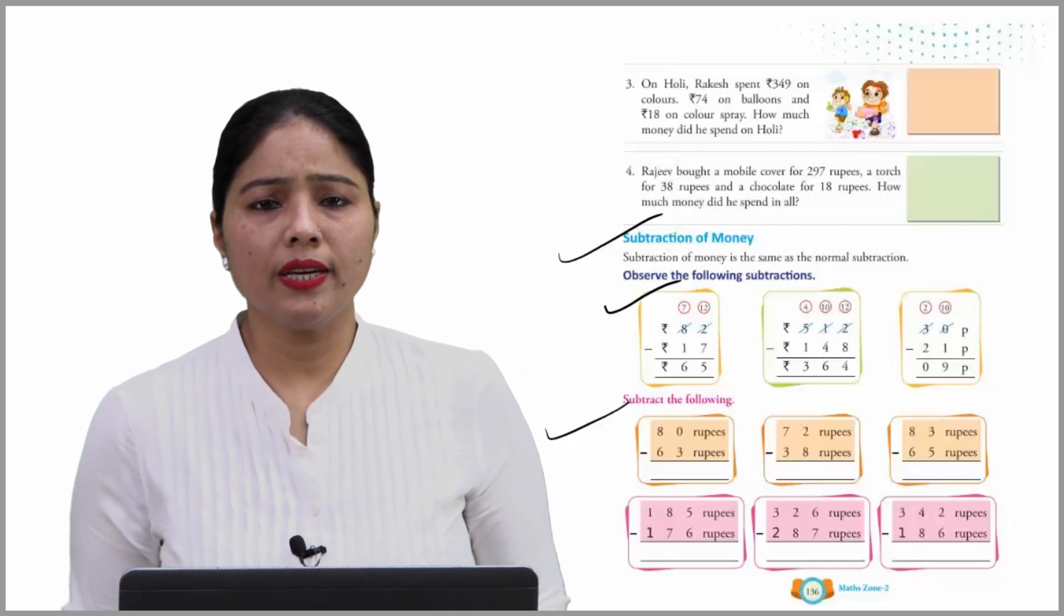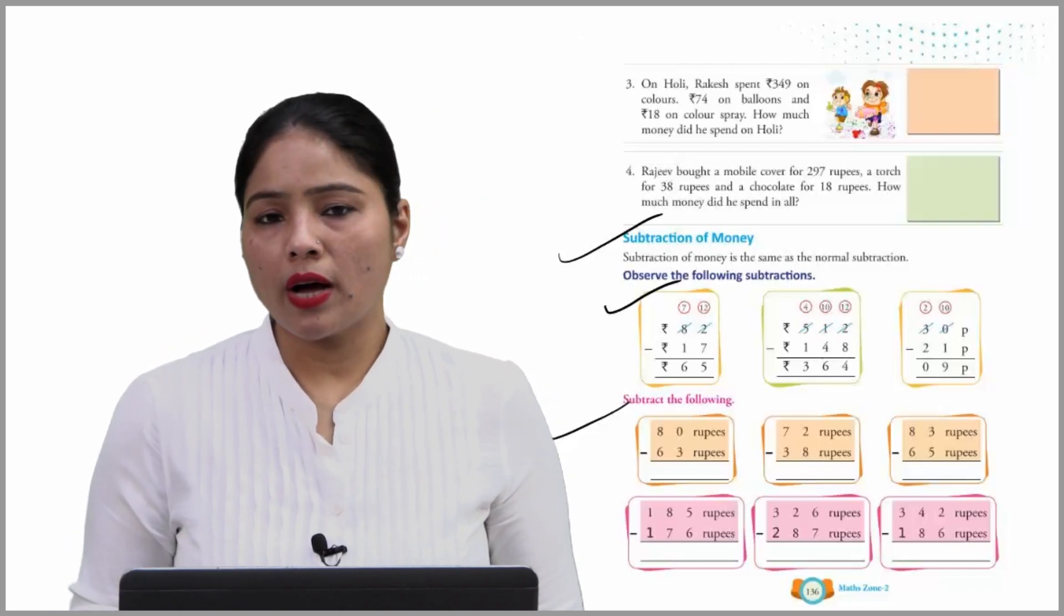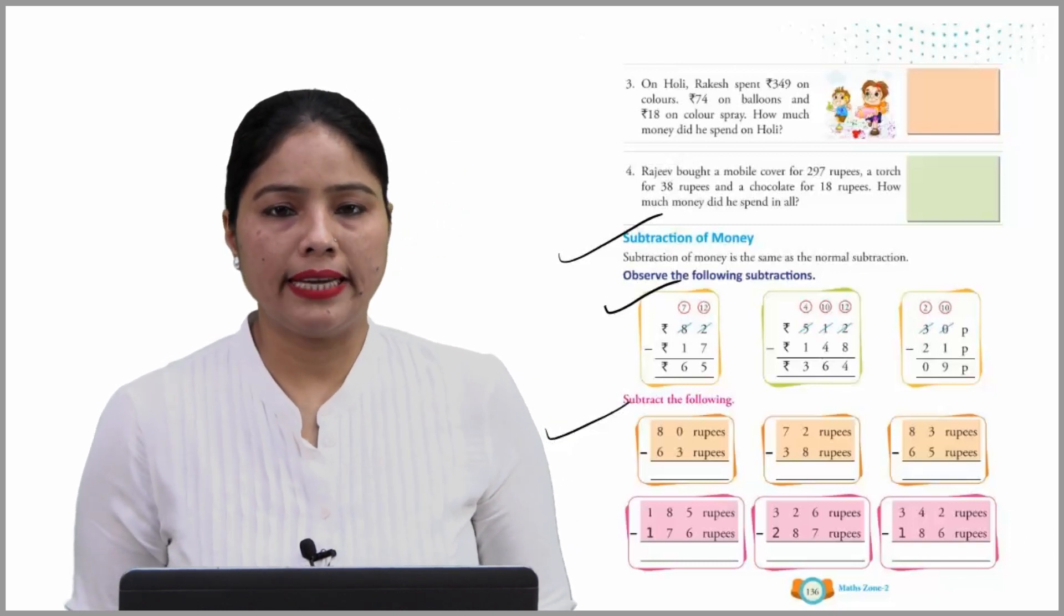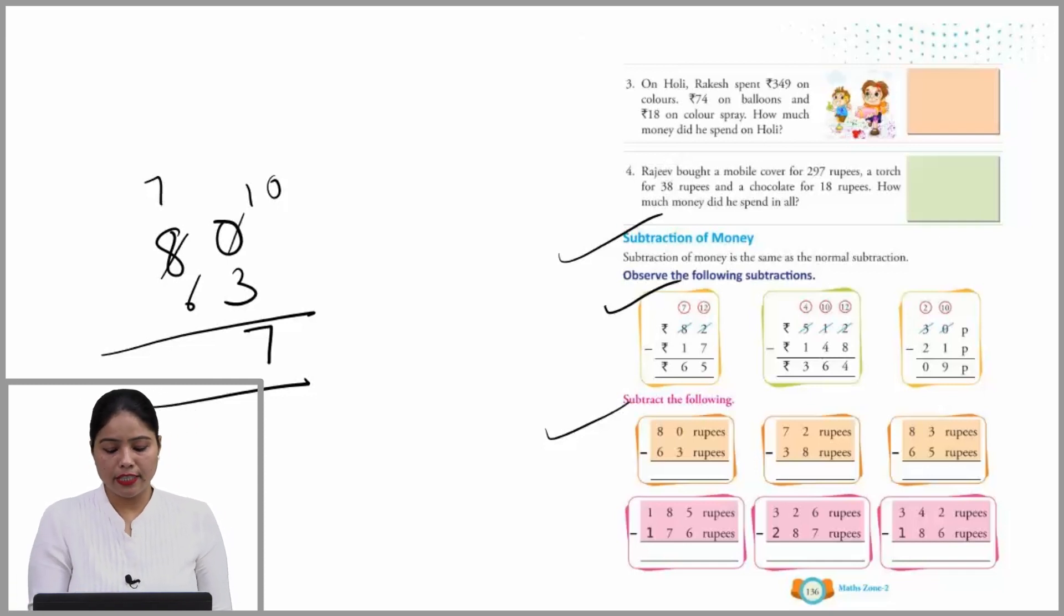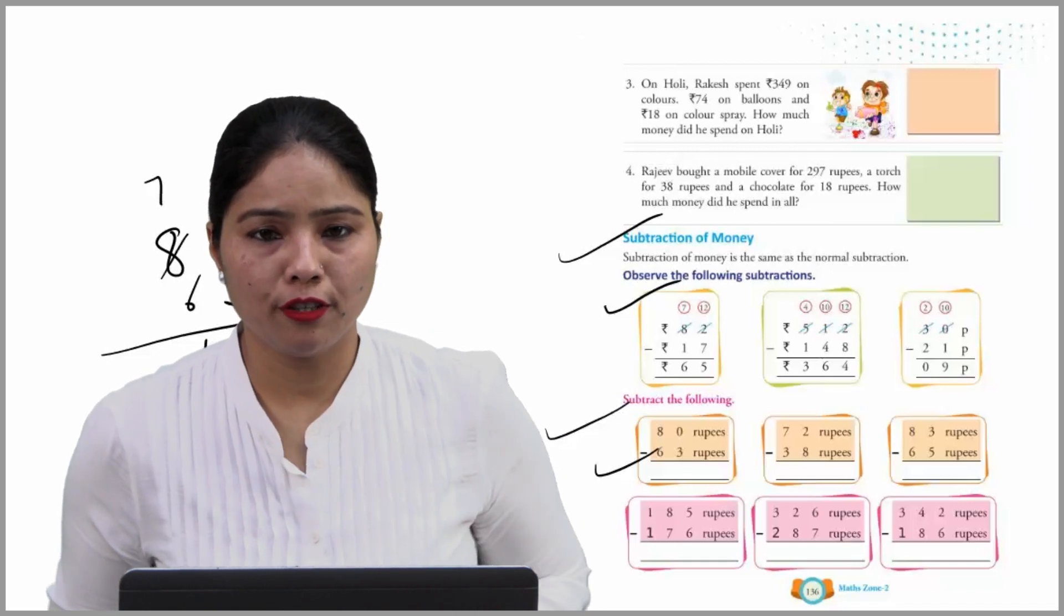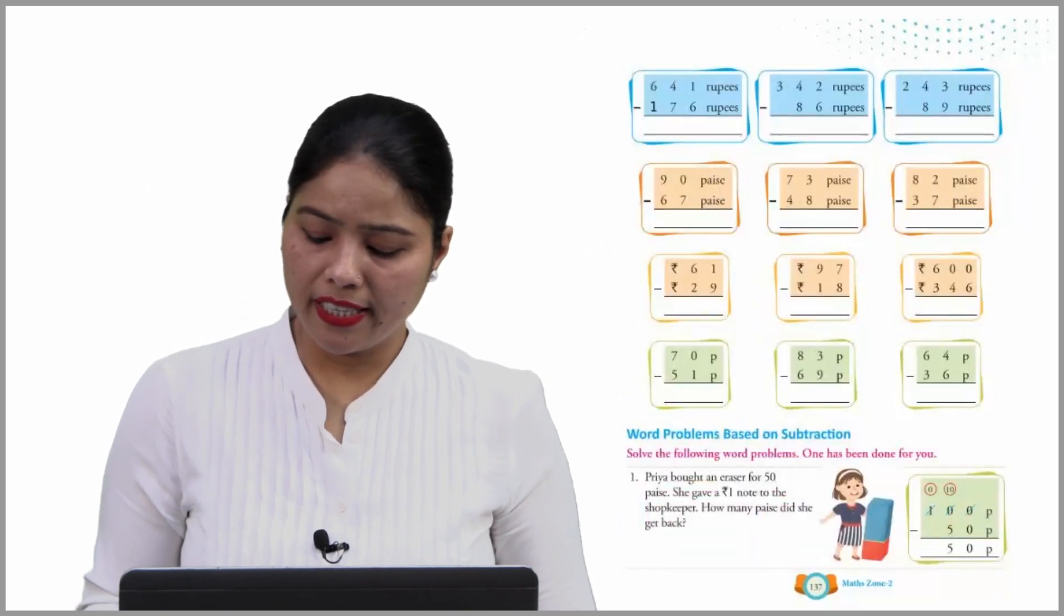Subtract the following: 80 rupees minus 63 rupees. Start with one's place. 0 minus 3 you can't subtract. Then 0 will take 1 borrow from 8. 0 minus 3 can't be done. Now it becomes 10, and it remains 7 here. 10 minus 3 is 7. And here it is 7. Then 7 minus 6 gives you 1. Then we can say that 17 rupees is the answer. You have to fill the others by your own. This is very easy.